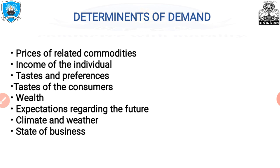The seventh determinant is climate and weather. The climate of an area and the prevailing weather have a decisive effect on consumer demand. In cold areas, woolen clothes are demanded. During hot summer days, ice is very much in demand. On a rainy day, ice cream is not so much demanded. So climate and weather are responsible for the shift in demand.